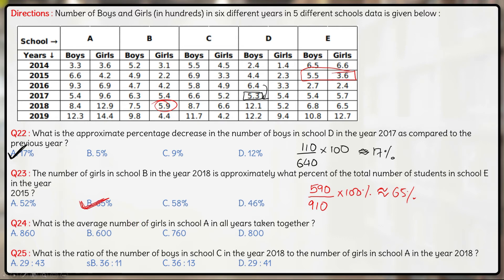What is the average number of girls in school A in all the years taken together? We need to first calculate the sum. Adding the girls' values: 6.2, then 6+2=8, 8+9=17, then 23, 23+9=32, 36. For the decimal part: 0.6 — 3+3=6, 6+4=10, 16, 16+9=25, 25+12=37, 37+14=41. So the running totals give us the sum of all girls in school A across 6 years.